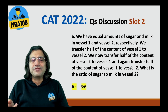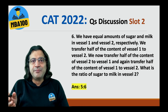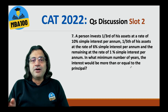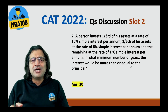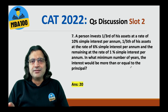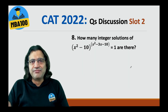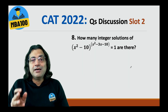Here, this was the exact question in the paper and the answer is 5 to 6. For this question, the answer is 20. It will take 20 years because the effective rate of interest is 5%.